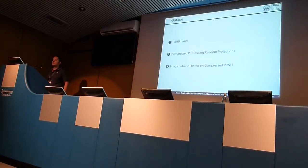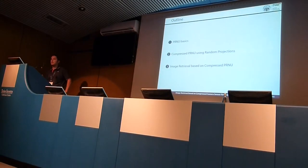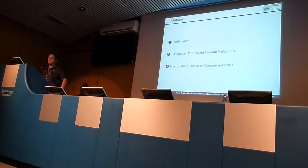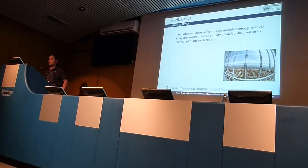I will first give some basics on PRNU — what is this photo-response non-uniformity and how we use it for searching for cameras and linking a picture to a given camera. Then I will introduce our proposed compressive PRNU strategy based on random projections. Finally, I will discuss and show some results about our image retrieval strategy based on this compressive PRNU implementation.